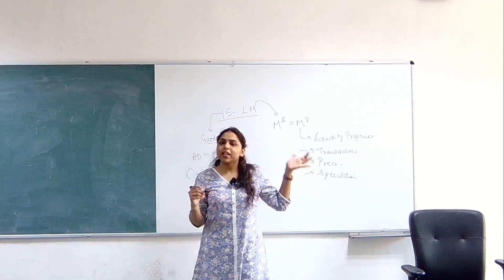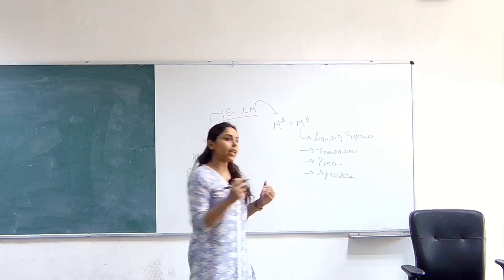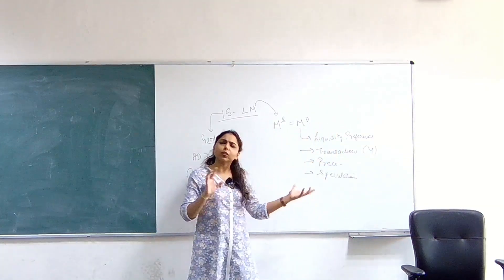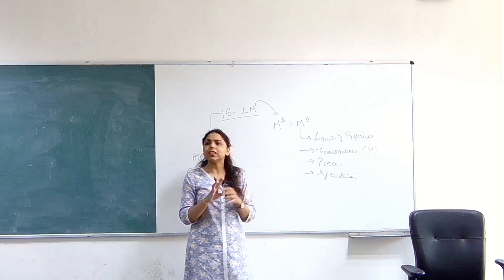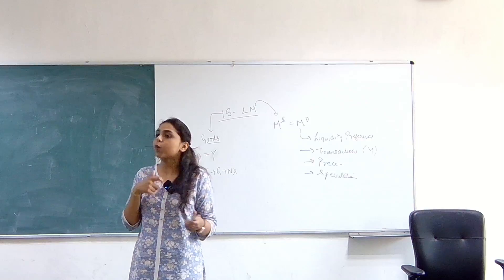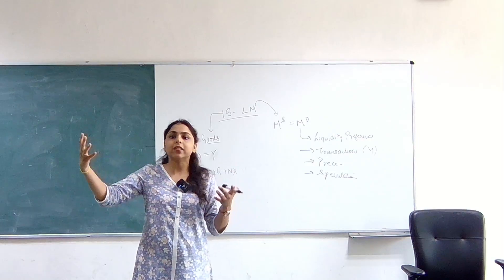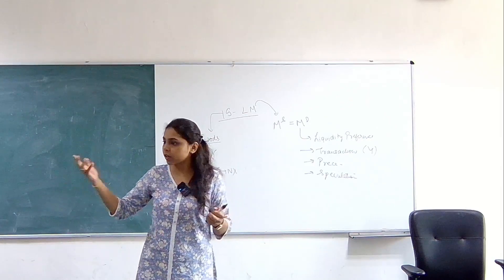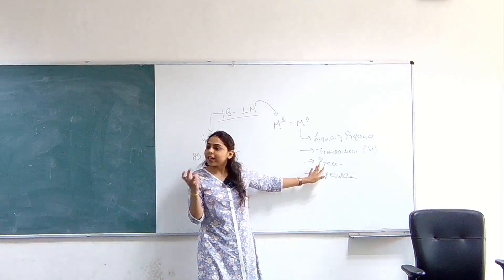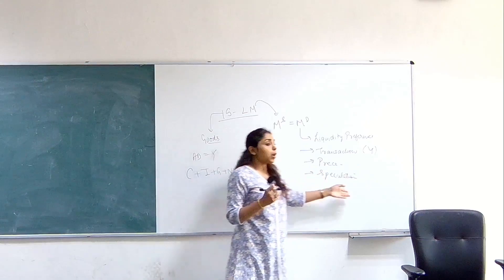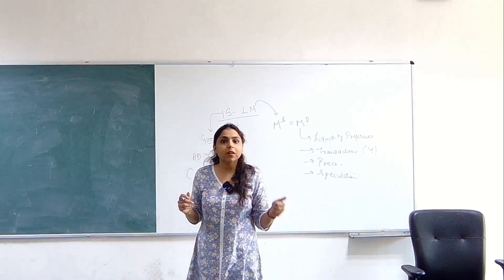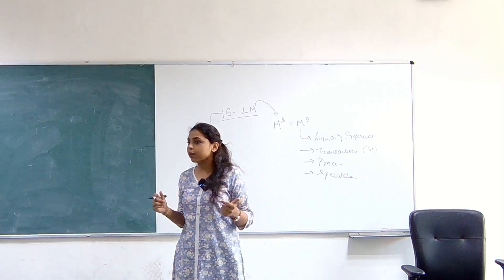When I talk about the transaction demand of money, it is directly related with income. Precautionary method also can be somewhat related to income, but it is how much money you want to hold for any unforeseen thing that may come in the future. This was not introduced in the classical method, but it is a part of the Keynes model.